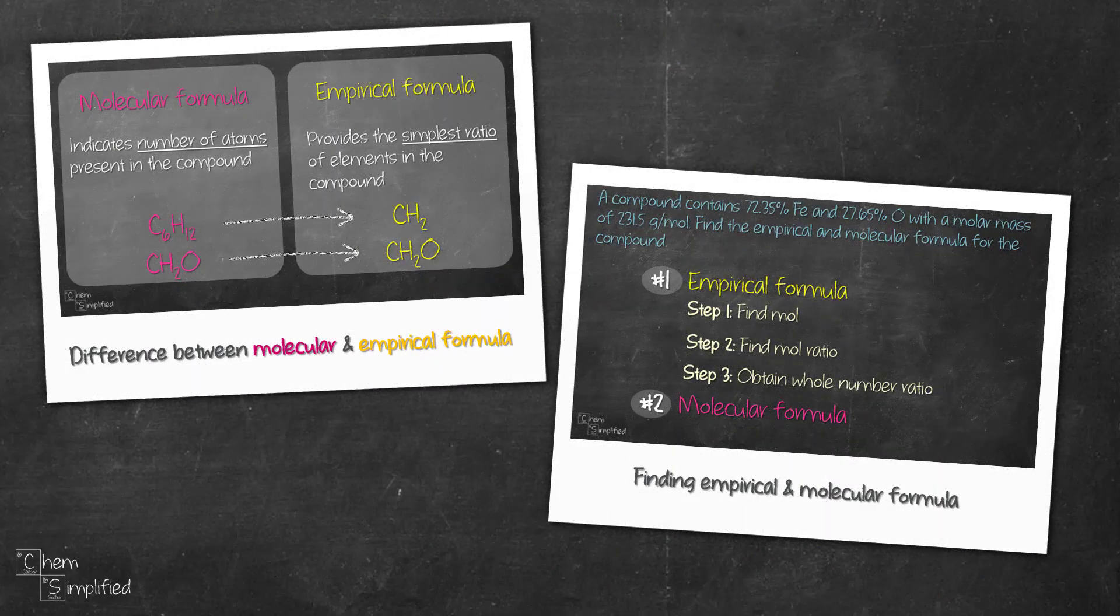With that, we're done looking at empirical and molecular formula. We found the empirical formula by first finding the mole for each element and then we divide with the smallest mole to find the mole ratio. After that, be sure to convert the mole ratios into whole numbers otherwise you're gonna get the wrong empirical formula. And then once you get the empirical formula, we find n to figure out what's the molecular formula.